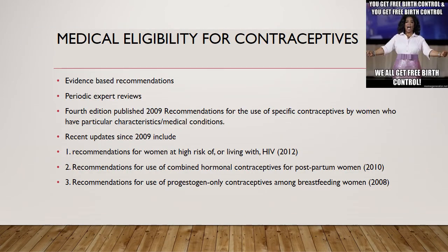The medical eligibility criteria for contraceptives is an evidence-based recommendation with periodic expert reviews. The fourth edition was published in 2009 with recommendations for the use of specific contraceptives by women with particular characteristics or medical conditions. Recent updates since 2009 include recommendations for women at high risk of or living with HIV, for combined hormonal contraceptive use in postpartum women, and for progesterone-only contraceptives amongst breastfeeding women. This document provides guidance on the safety of 19 contraceptives for women and men with specific conditions ranging from age, smoking, and parity to cardiovascular disease, cancer, and infections.